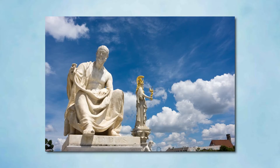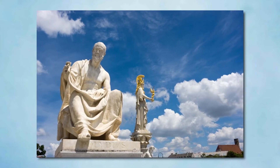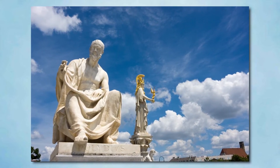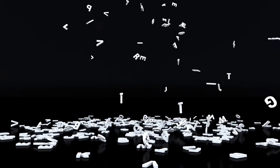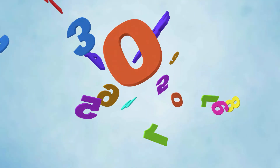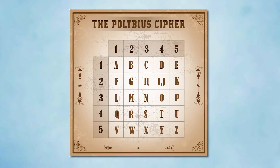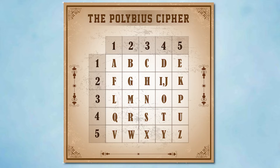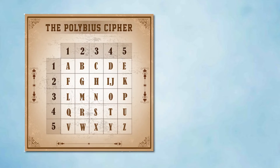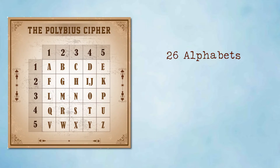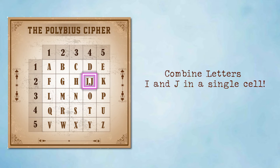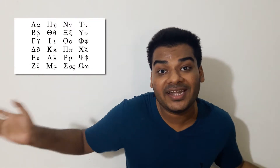Our first cipher is the Polybius cipher. In ancient Greece, Polybius, a historian and scholar of the second century BC, developed a system for reducing the letters of the alphabet to simple pairs of numbers using a device now known as the Polybius square. A Polybius square is a table that allows someone to convert letters into numbers. In order to fit the 26 letters of the alphabet into the 25 cells, the letters I and J are usually combined together in a single cell. Fun fact: originally there was no such problem because the ancient Greek alphabet had only 24 letters.